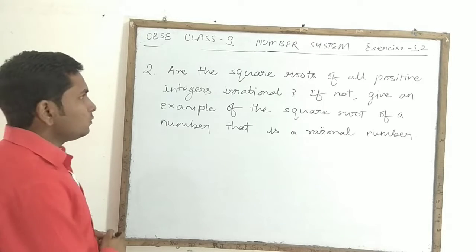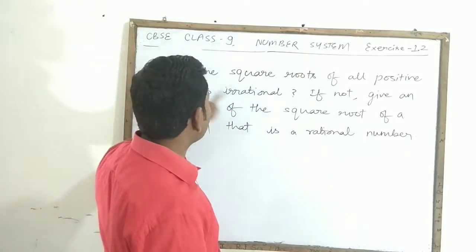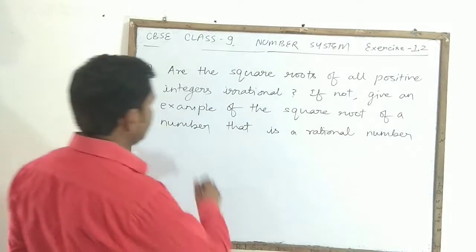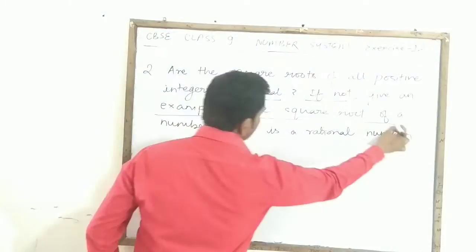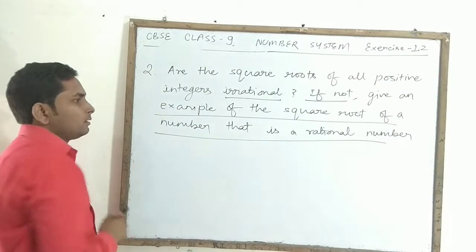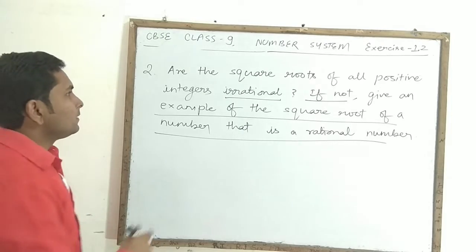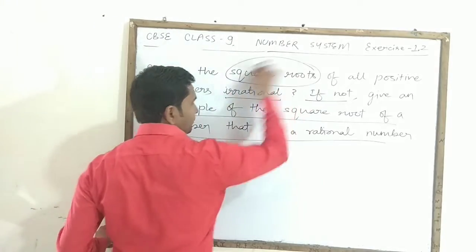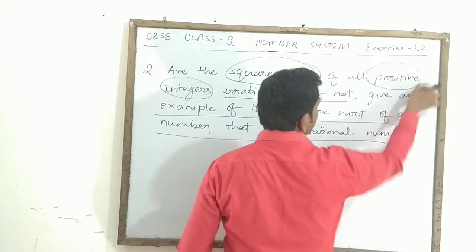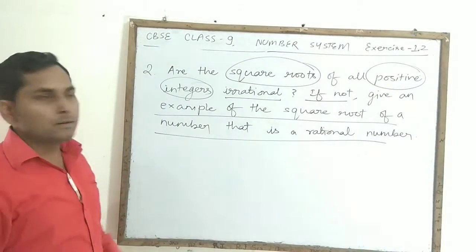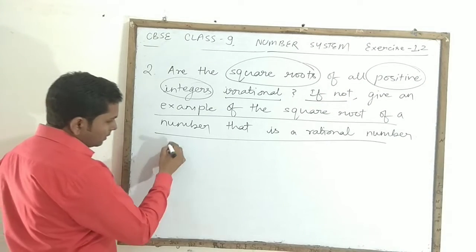Question number two: Are the square roots of all positive integers irrational? If not, give an example of the square root of a number that is rational. We need to check the square roots of all positive integers to see if they are irrational.